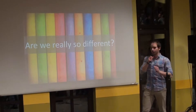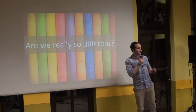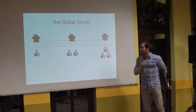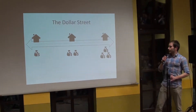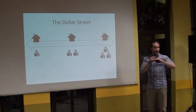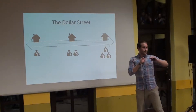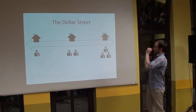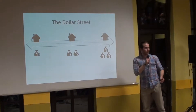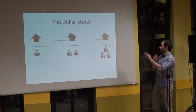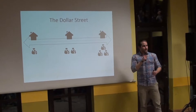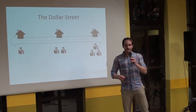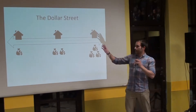Good. Today I want to confront you with one question: are we really so different? We're going to make an experiment. This is a dollar street. Now take all the people here and distribute them depending on their income. You will have on the very left side the poorest people here, and on the very right side the richest. Who of you thinks that you're going to be more or less in the middle?